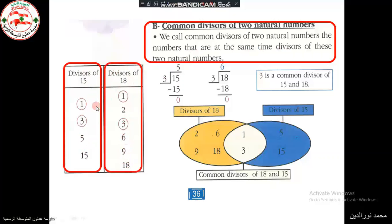There are some common divisors between 15 and 18, which are 1 and 3. We put in the Venn diagram in the middle the common divisors of 15 and 18, which are 1 and 3.